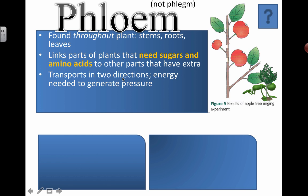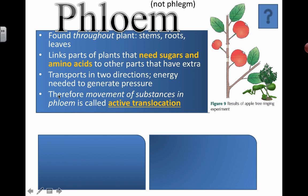Energy is needed to generate the pressure in order to move these substances from one place to another. It's called hydrostatic pressure, and we're going to see that in a little bit. Therefore, the movement of substances in phloem is called active translocation. Active because it's an active transporting process - it means energy is required, and that energy is usually going to be in the form of ATP.